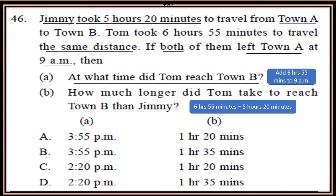Let's start the video. Jimmy took 5 hours 20 minutes to travel from town A to town B. Tom took 6 hours 55 minutes to travel the same distance. If both of them left town A at 9 a.m., Part A: at what time did Tom reach town B? See the hint and try to solve. Part B: how much longer did Tom take to reach town B than Jimmy? See the hint and try to solve.